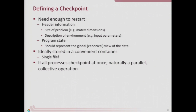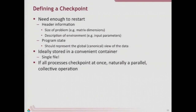We're going to define an API with five functions: an initialize function, a finalize function, a checkpoint function, a function that lets us know if we can restart or not, and then a restart function. They're all collective, so all processes must make these calls.